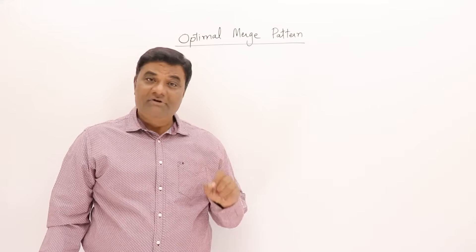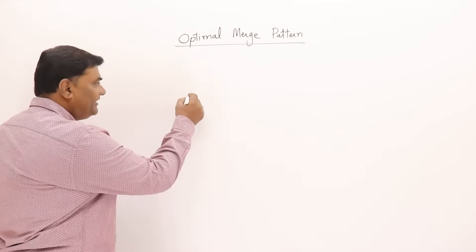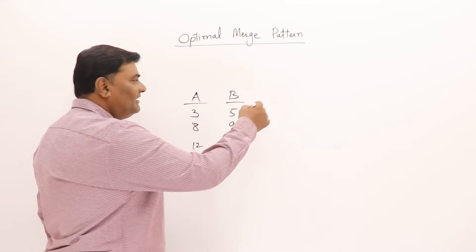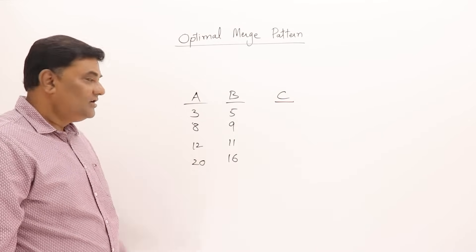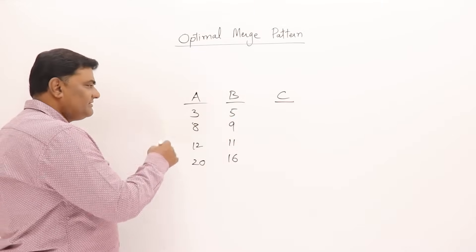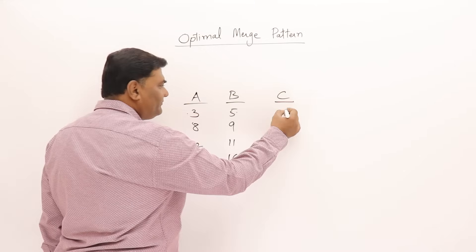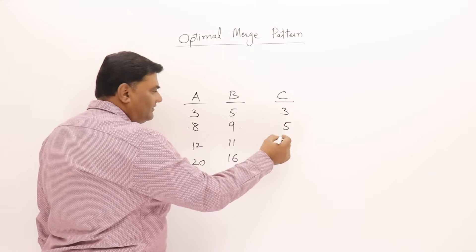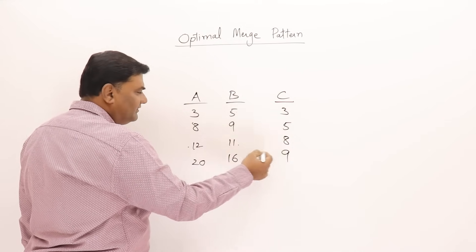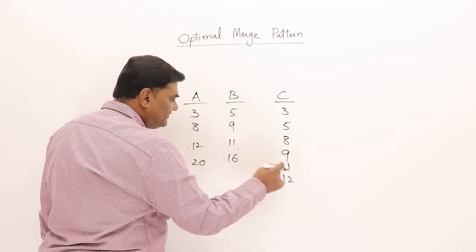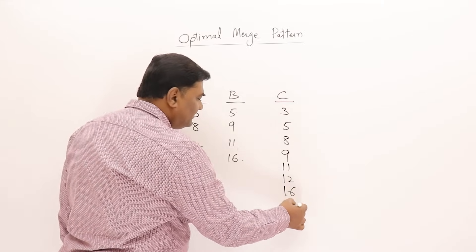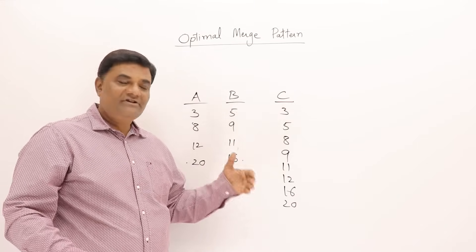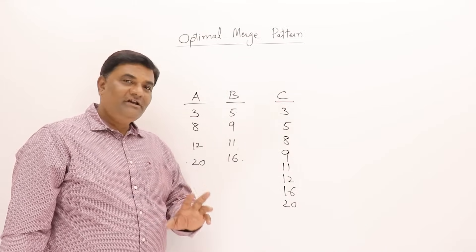Before going into Optimal Merge Pattern, we should first understand merging. If I have a list A and a list B with some set of elements — two sorted lists — I have to combine them and get a third sorted list. We compare the first element of each; whichever is smaller we write down, then move to the next. Elements are compared one by one and we get a single sorted list.